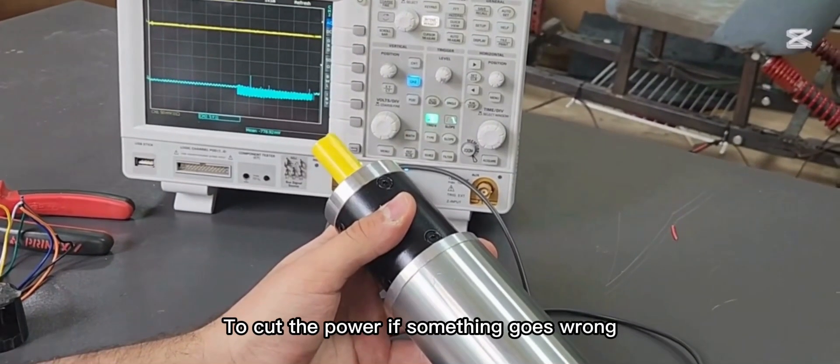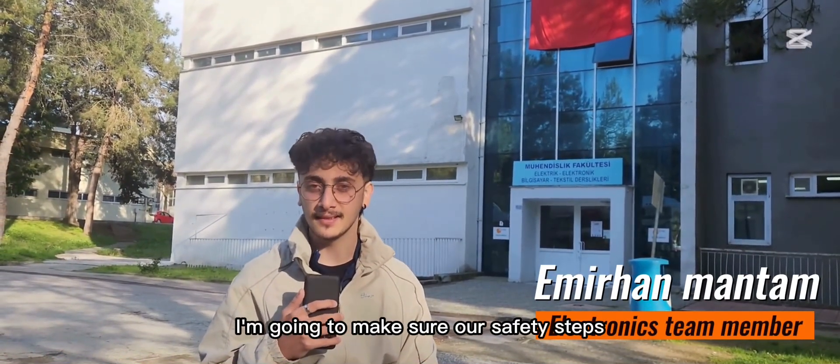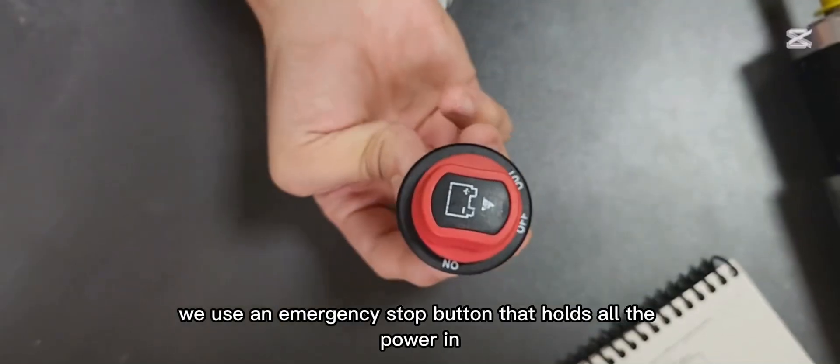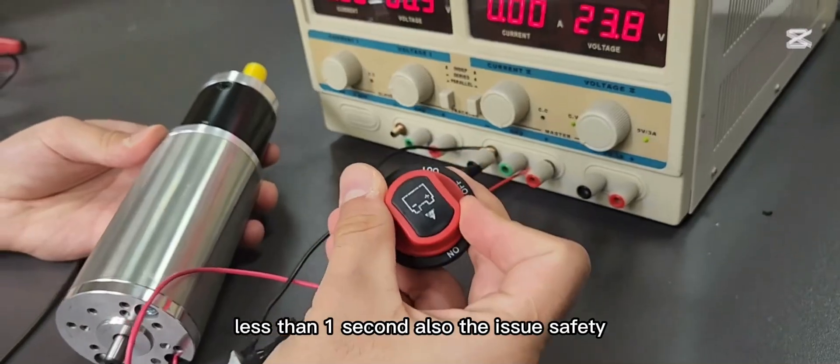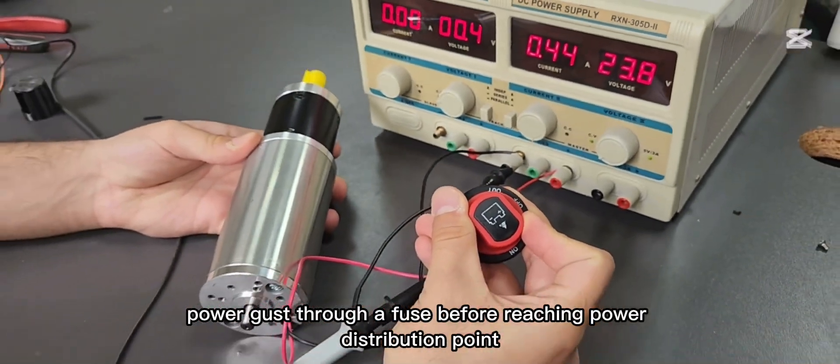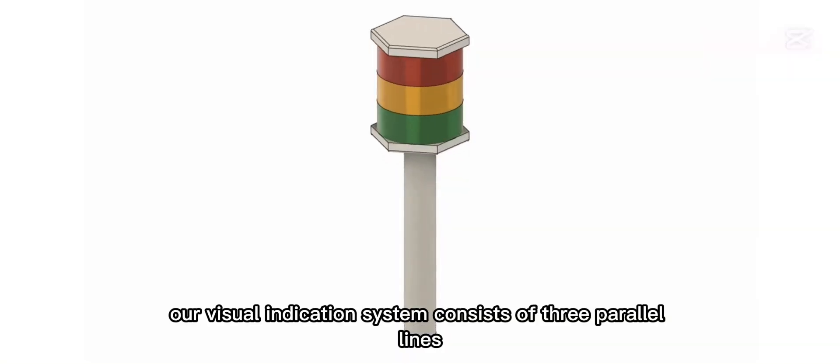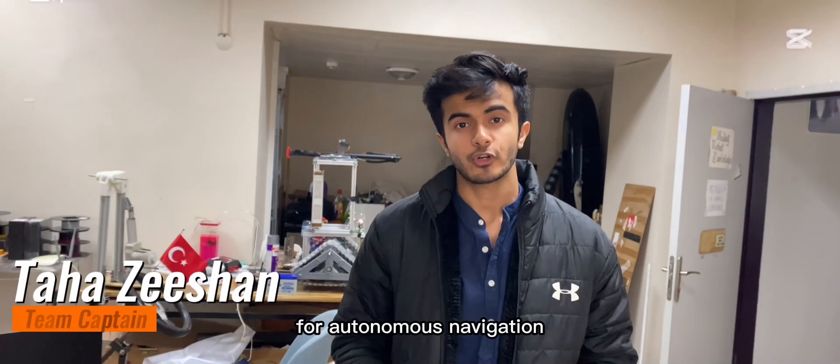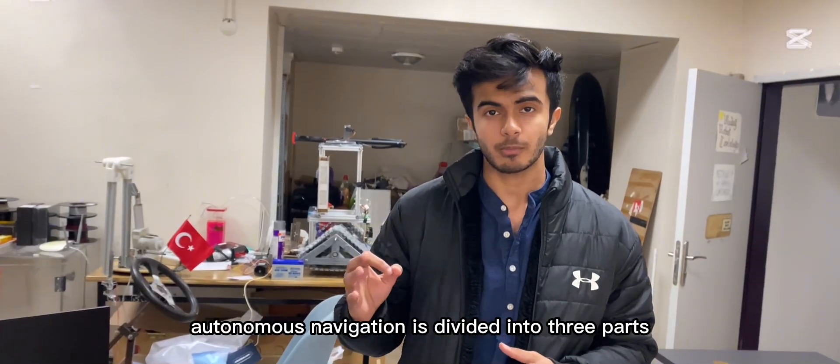Hello, in this part I am going to mention rover safety systems. We use an emergency stop button that cuts all the power in less than 1 second. Also to ensure safety, power goes through a fuse before reaching power distribution board. Our visual indication system consists of 3 power LEDs that show rover's condition. For autonomous navigation, we will be going this year with a hybrid approach. We will be using ROS2 with our custom scripts. Autonomous navigation is divided into 3 parts.